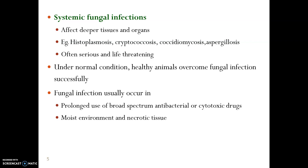Moving to systemic fungal infection — this means the fungal infection occurs in the body systems, affecting deeper tissues and organs. Histoplasmosis, Cryptococcus, Coccidioidomycosis, and Aspergillosis are serious systemic issues and are more dangerous and life-threatening. Under normal conditions, animals can overcome fungal infections with correct antifungal treatment. Fungal infections often occur when broad-spectrum antibacterial or cytotoxic drugs have been used, as this decreases the normal bacterial flora and creates conditions very suitable for fungal growth.